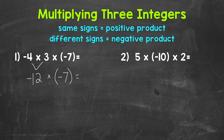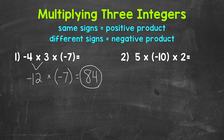So now we end with negative 12 times negative seven. We have a negative and a negative, so same signs. That's going to give us a positive product. Let's think of this as 12 times seven, which is 84, and again, that's going to be positive. Final answer: positive 84.